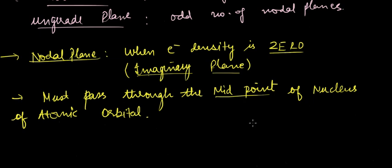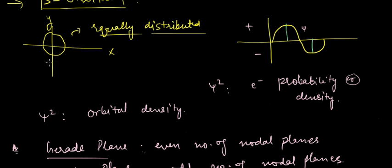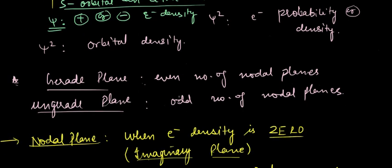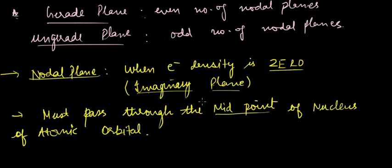The sign of the wave function phi can either be positive or negative, but cannot be both at the same time. In the case of the s orbital, it can either have positive or negative electron density — that is, the value of phi. With this we come to the end of this lecture; in the next lecture we will look at the shape of p orbitals. Good luck and goodbye.